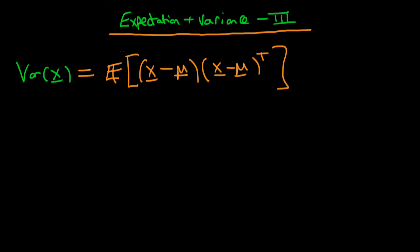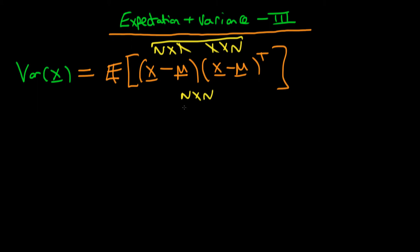Now the dimensions match up because we have an m by 1 vector times a 1 by n vector, so the inner two indices cancel and we're left with an n by n matrix overall. So let's prove that this actually adds up to what we had before.